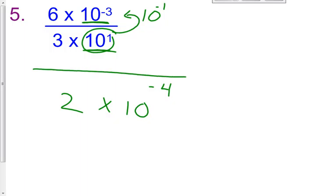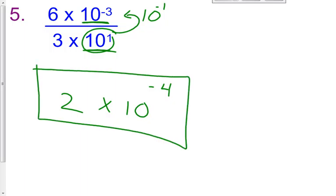Adding the exponents: negative 3 plus negative 1 gives negative 4. So our answer is 2 times 10 to the negative fourth. You might think this seems contradictory since we have a negative exponent, but in scientific notation, it is perfectly acceptable to have a negative exponent — it tells us how small the number is in standard notation.